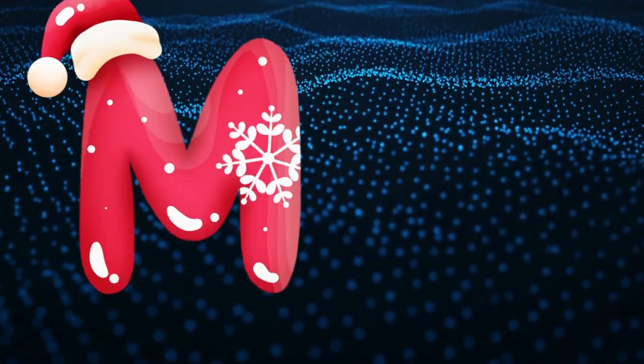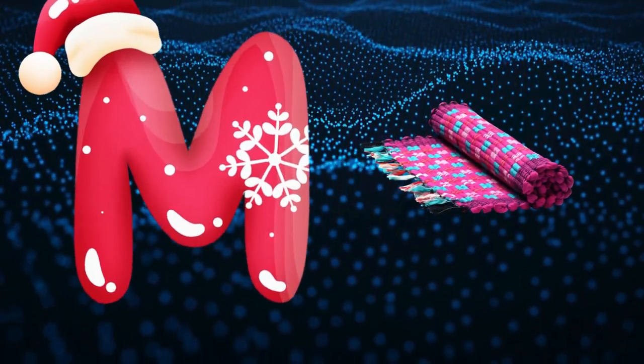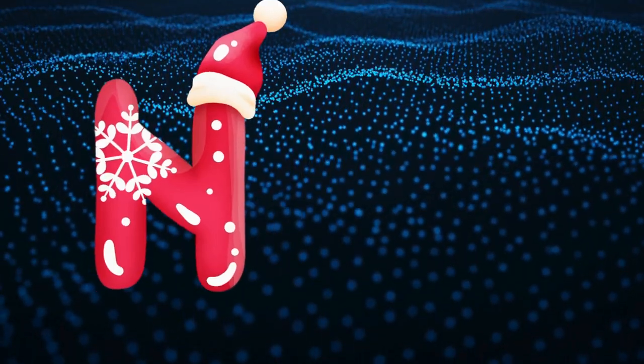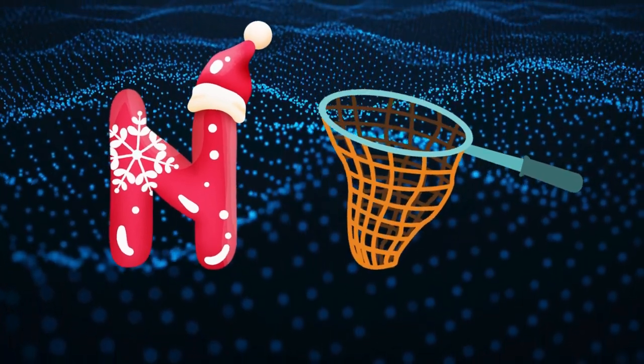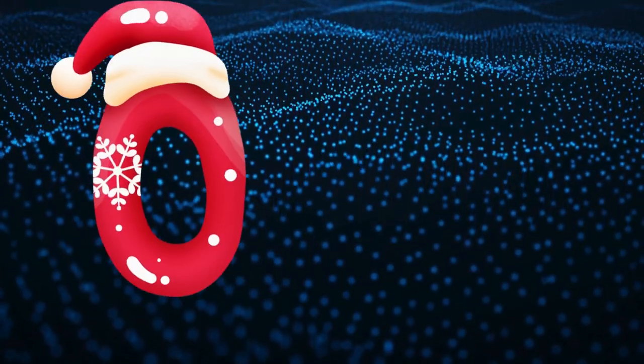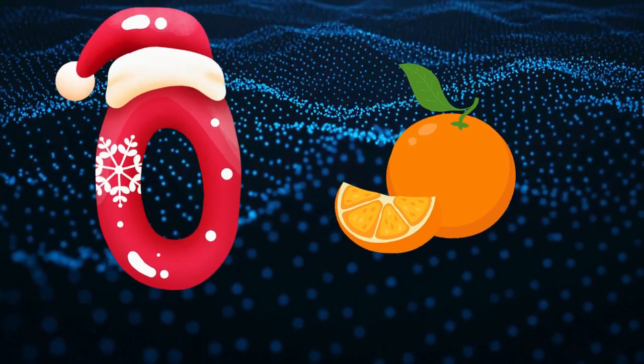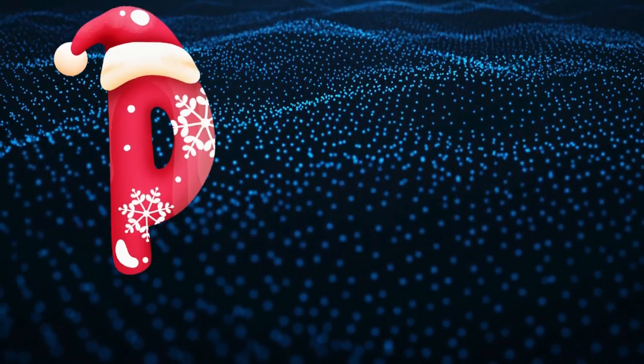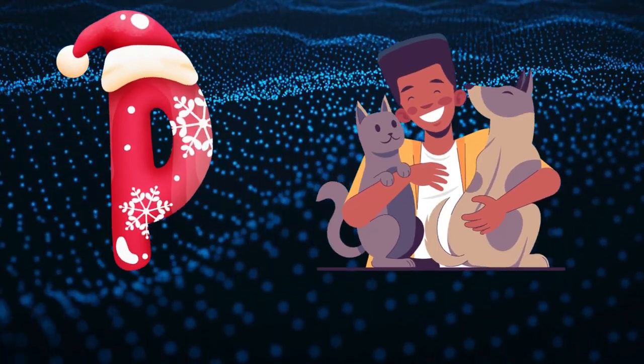M is for mat, m-m-mat. N is for net, n-n-net. O is for orange, o-o-orange. P is for pet, p-p-pet.